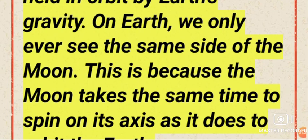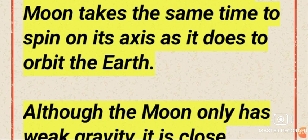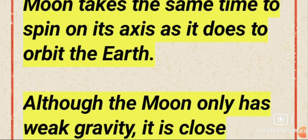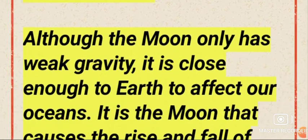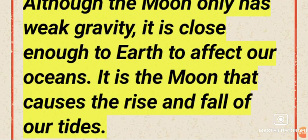On Earth, we only ever see the same side of the Moon. This is because the Moon takes the same time to spin on its axis as it does to orbit the Earth.